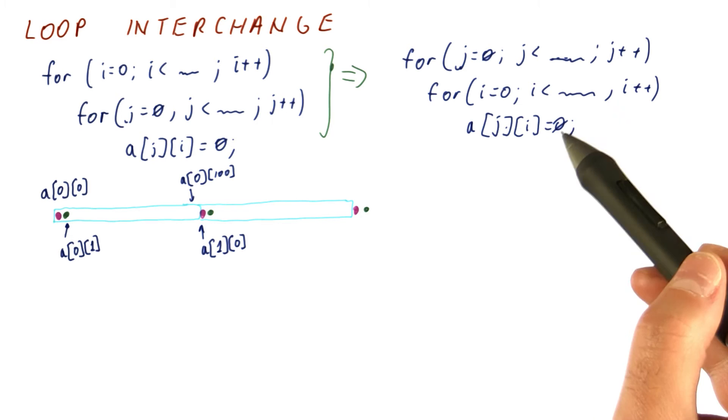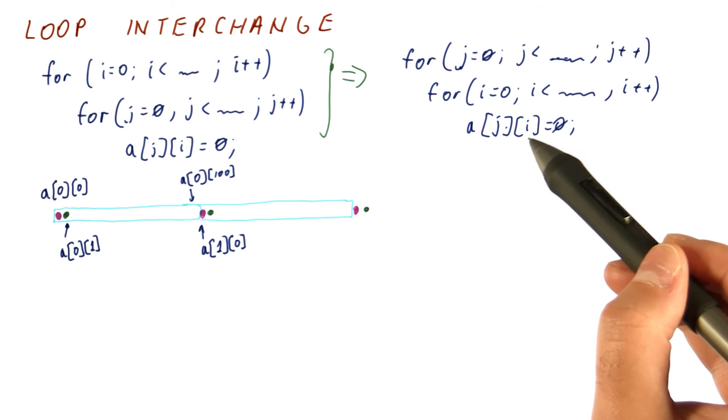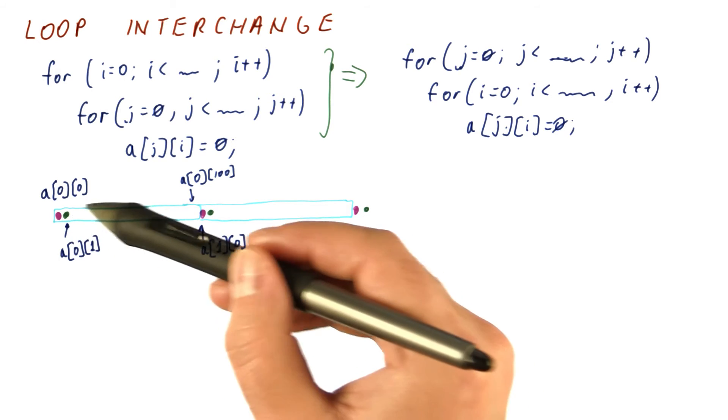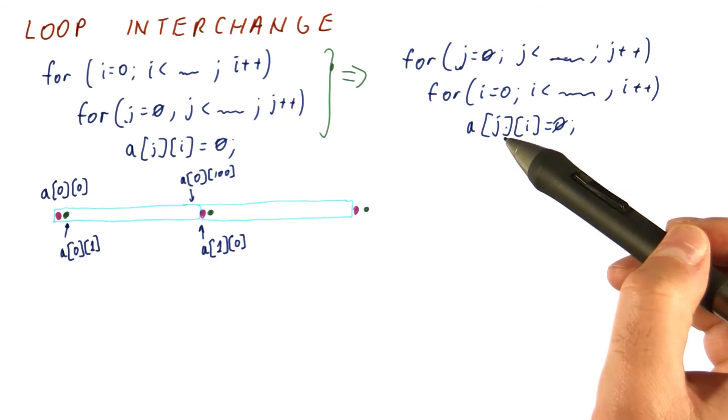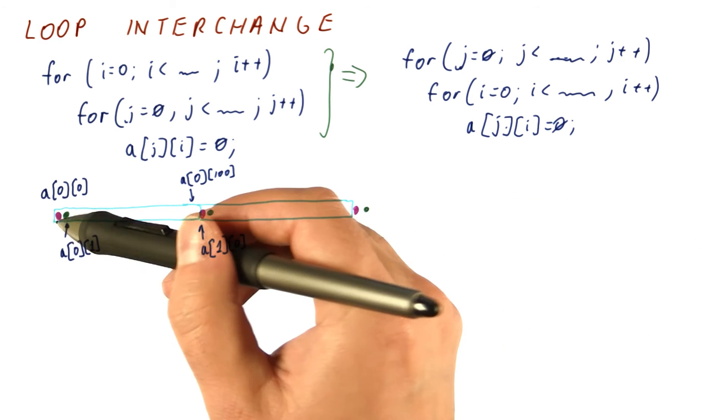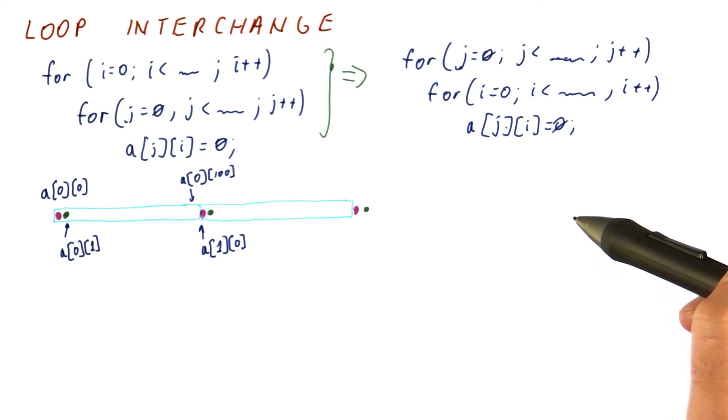So now the inner loop is the one that moves to the next element in memory. Once we fetch a block from memory, we end up using the whole block. Only then we move to the next block and so on. Once we are done with the row, we move on to the next row. So now we are nicely sequentially accessing this matrix.